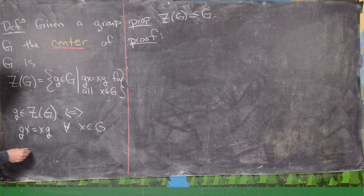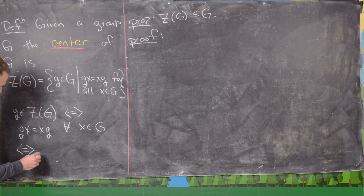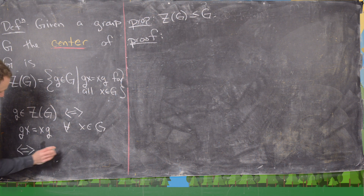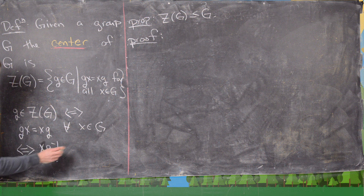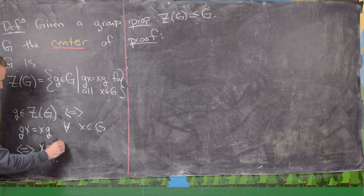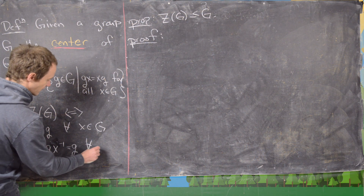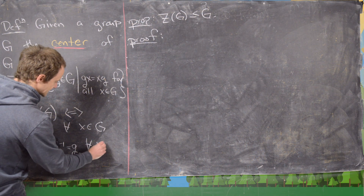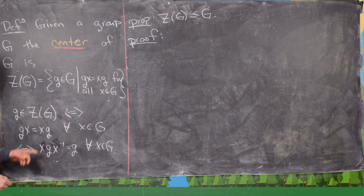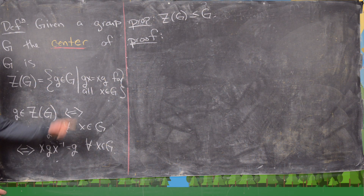That's the same thing as if and only if xgx inverse equals g for all x in G. And sometimes this is a useful way to look at it.